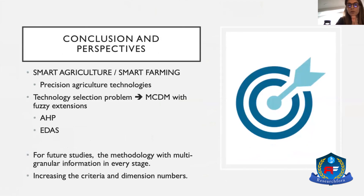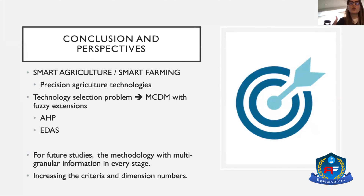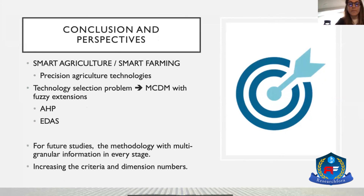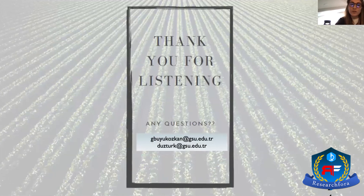In our paper, we focused on the smart agriculture subject and created a decision-making model for technology assessment and selection. We used a multi-criteria decision-making approach to provide a flexible environment for decision-makers and to guide practitioners in adapting their traditional systems to the new digital era. Thank you very much for listening.